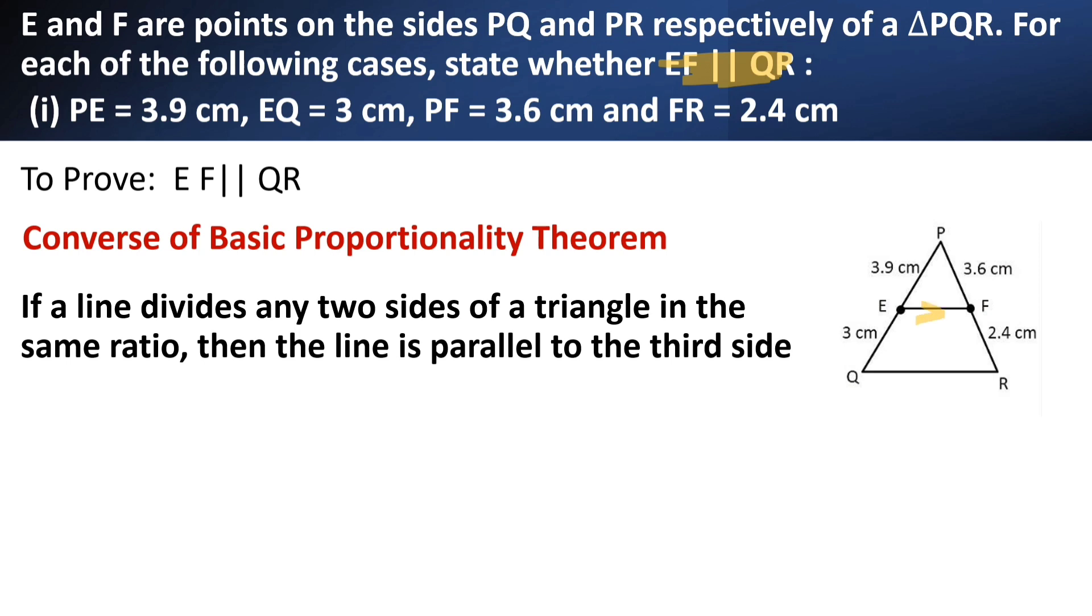EF is the line. It divides PQ and PR. If it divides in the same ratio, means PE by EQ is equal to PF by FR, then the line EF is parallel to QR.